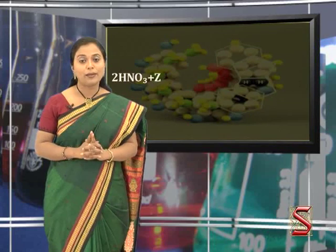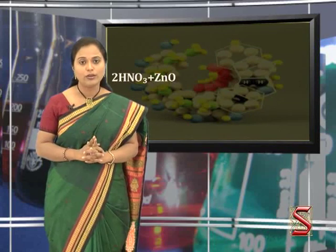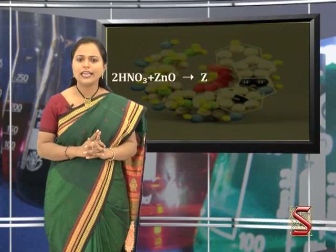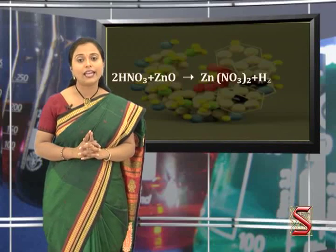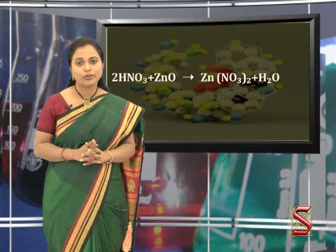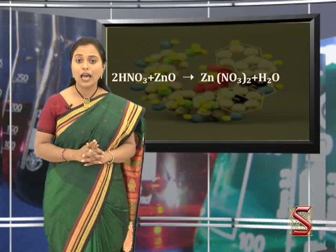From the above observation, we can say that when a metallic oxide reacts with acid, it forms salt and water. Here is an example to illustrate this property: 2HNO₃ + ZnO → Zn(NO₃)₂ + H₂O.